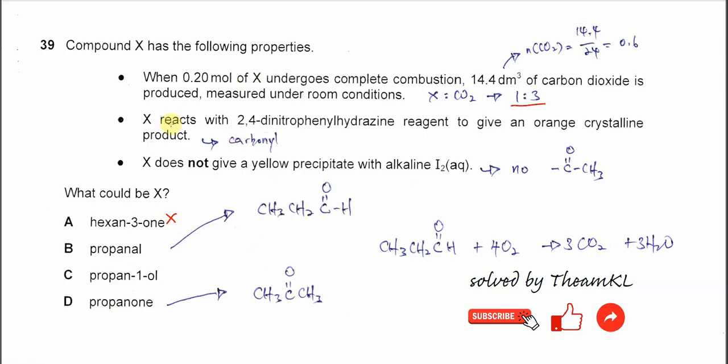Now let's look at the second statement. X reacts with 2,4-DNPH to give orange crystalline products. So we know that X now has a carbonyl group. The answer now cannot be C because it's alcohol. So it could be propanal or propanone.